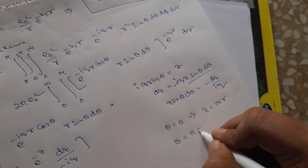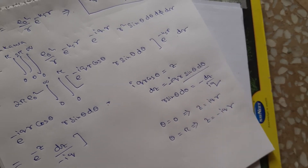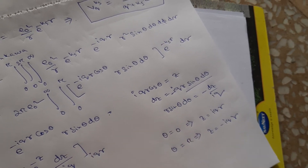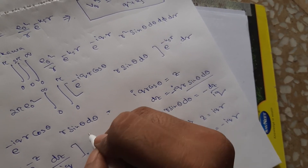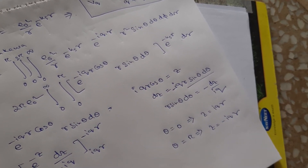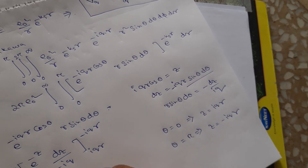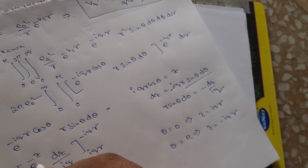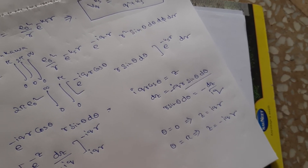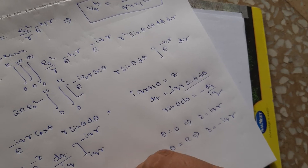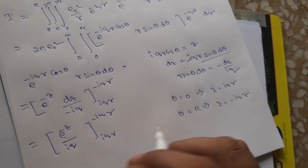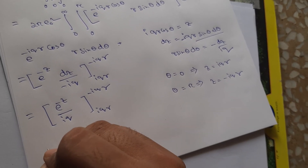When θ equals 0, z equals i q r, and when θ equals π, z equals minus i q r. So the integration limits change to i q r down to minus i q r. After evaluating, the result is e to the power minus i q r minus e to the power plus i q r, all divided by i q.